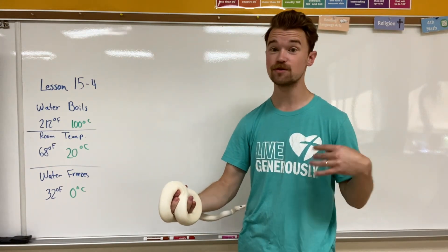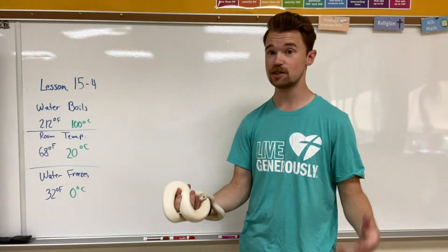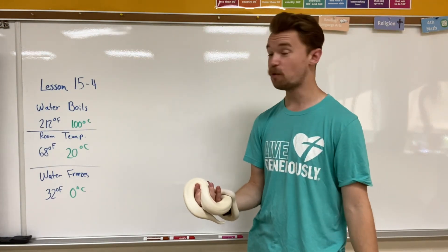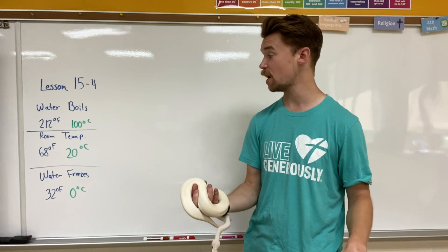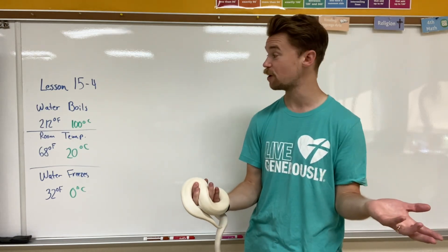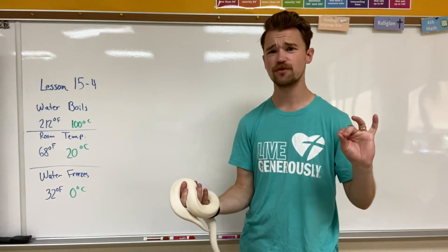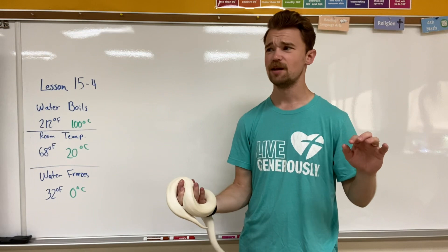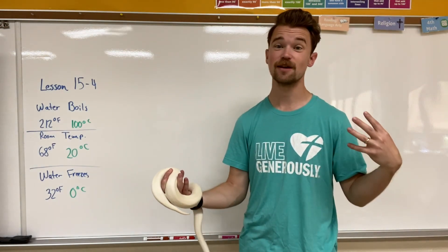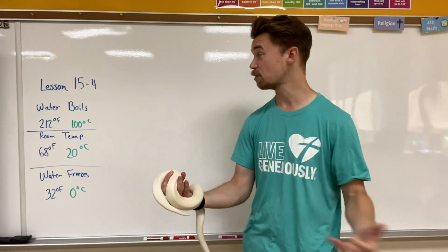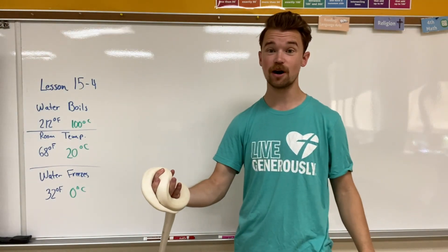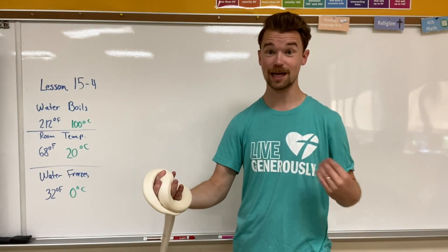In America, we use Fahrenheit for certain temperatures. Water boils at 212 degrees Fahrenheit, it freezes at 32 degrees Fahrenheit, and a comfortable room temperature on the chillier side would be 68 degrees Fahrenheit. I'll keep those temperatures up on the board to help us with our temperature gauging.